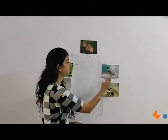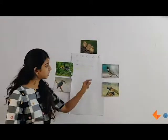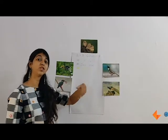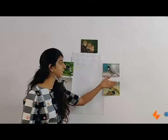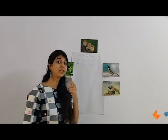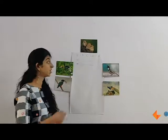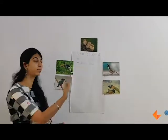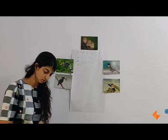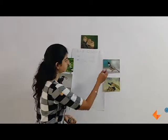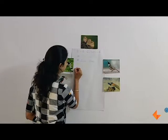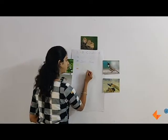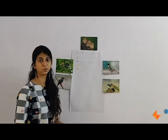Now ask children to look at another picture. Ask them which colour do you see very little of on this bird. If the children ask you the name of the bird, you can tell them this is a bulbul. What is the colour you see on the face of the bulbul? This way children are also starting to connect their own body parts and understand that birds also have those body parts. Take the colour red and label it.